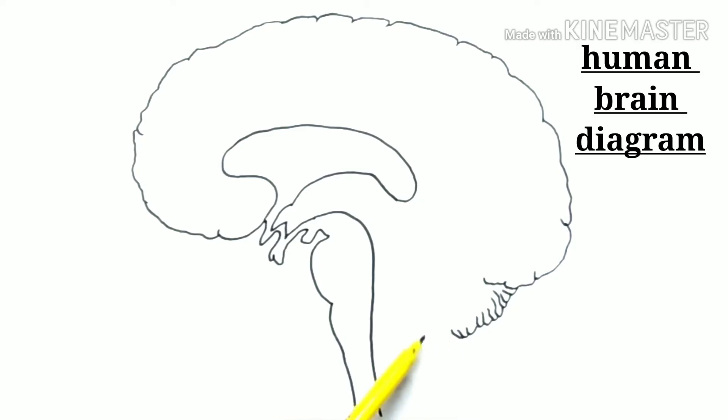Midbrain: It connects the hindbrain with the forebrain. It is a part of the central nervous system associated with vision, motor control, sleep-wake cycle, hearing, and temperature regulation.